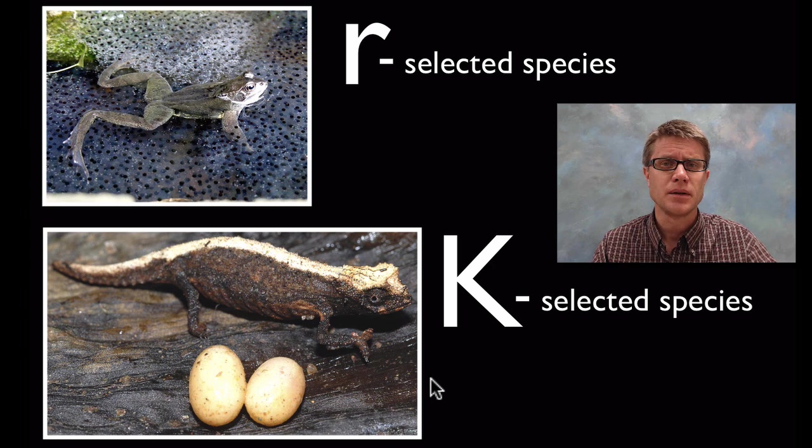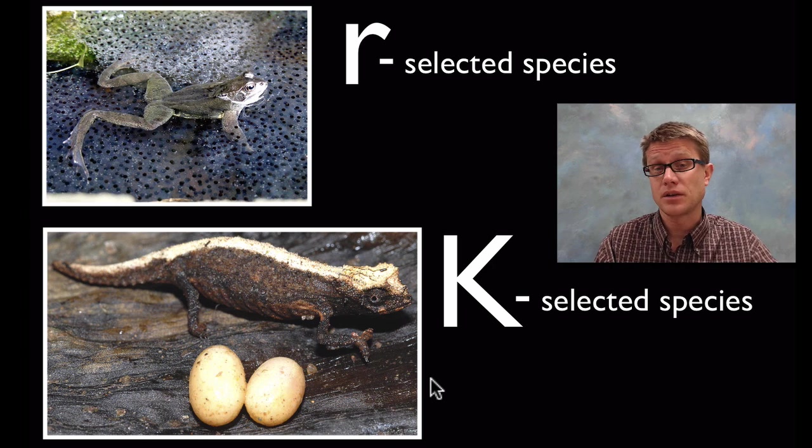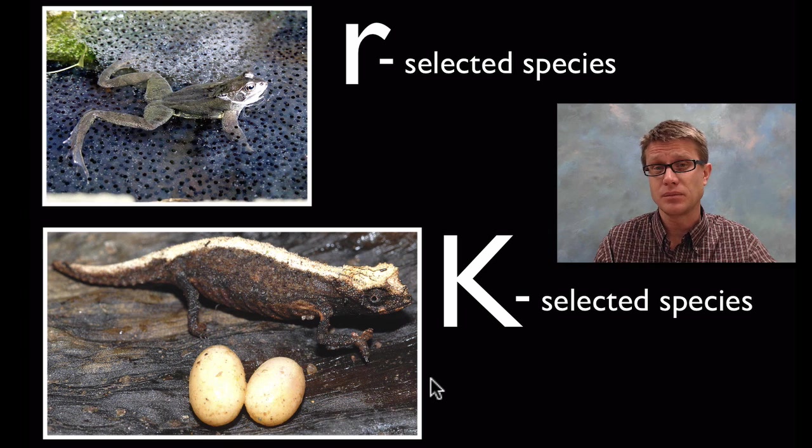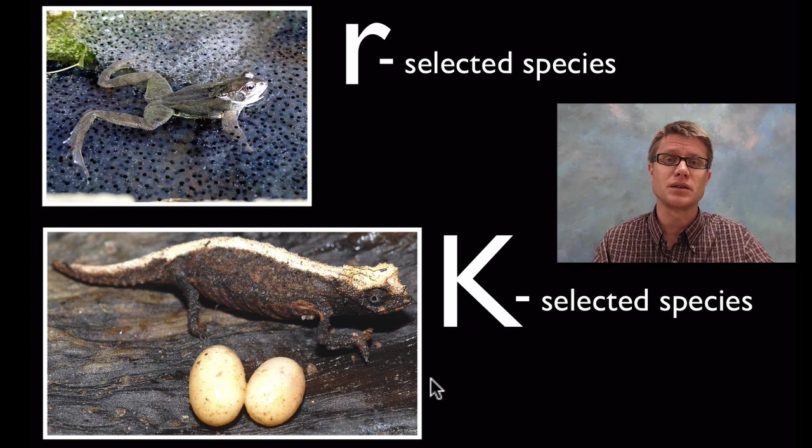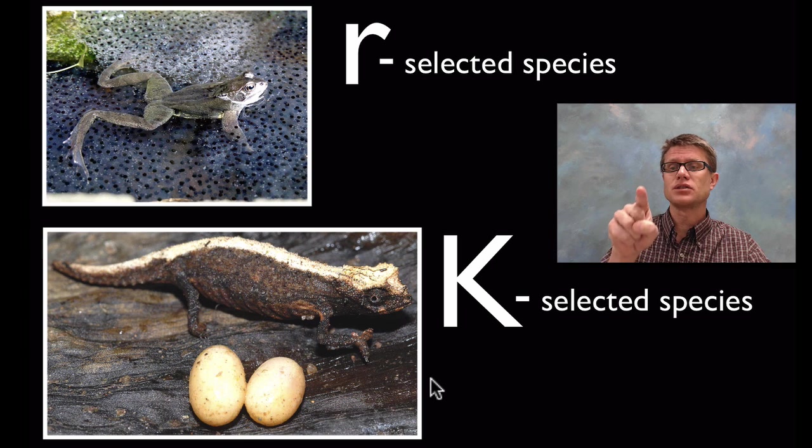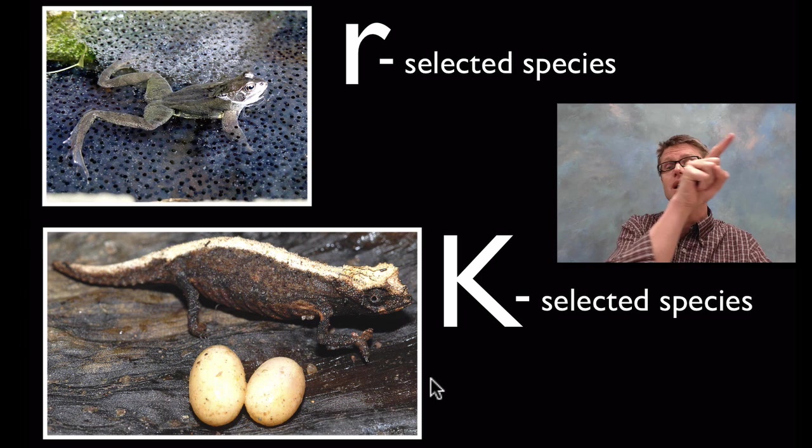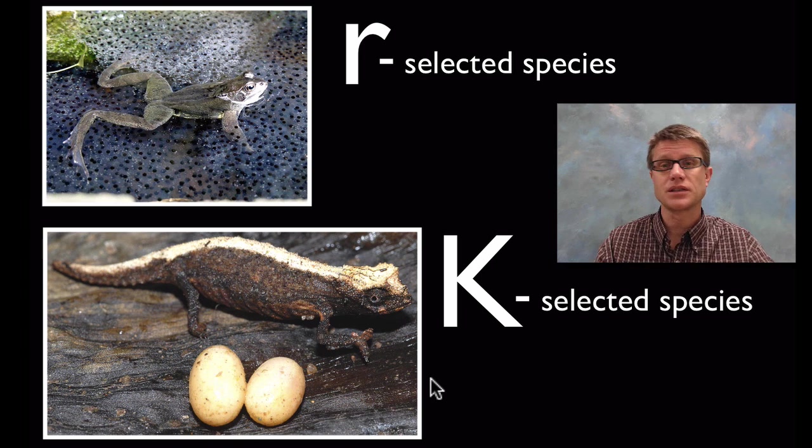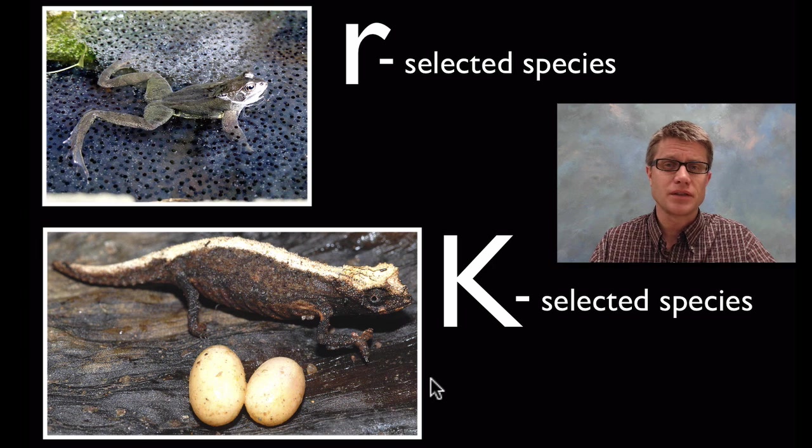So what are we? What are humans? Well we invest a lot in our young. A lot of my students are 17 years old and they still live at home. Their parents take care of them. So we're really investing in them. So what kind of a population curve are we going to see in humans? We're going to see a gradual exponential increase and then a nice carrying capacity which we're eventually going to reach. And we don't want to have this boom and bust cycle.